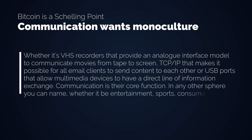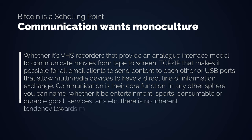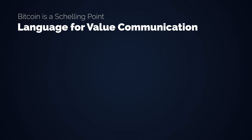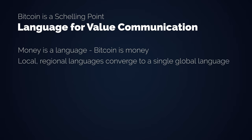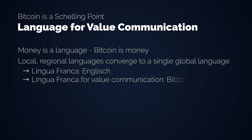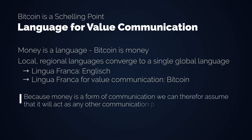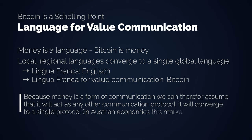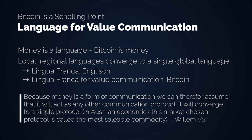In any other sphere — whether entertainment, sports, consumable or durable goods, services, arts, etc. — there is no inherent tendency towards monoculture. Bitcoin is often compared to a protocol or a language, which is clearly from the sphere of communication. Money is a language — it's our way to express value to each other. We have many different languages, but when a German talks to a Swede or a Peruvian talks to a Japanese, they use the lingua franca, which is English. Bitcoin is the lingua franca to communicate value in the next global monetary system. Because money is a form of communication, it will converge to a single protocol — in Austrian economics, this market-chosen protocol is called the most sellable commodity.